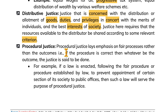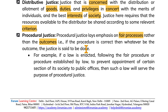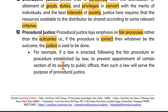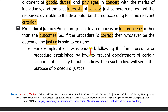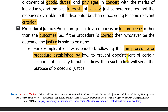Procedural justice lays emphasis on fair processes rather than outcomes. That is, if the procedure is correct, then whatever be the outcome, justice is said to be done. For example, if a law is enacted following fair procedure or procedure established by law, even if it prevents certain sections from public offices, such a law will serve the purpose of procedural justice.